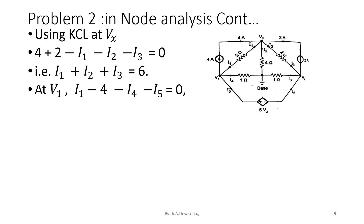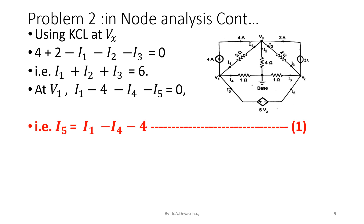At the node V suffix AX, the current I1 is entering and the current source 4 amps is leaving. Similarly, the current I4 is leaving and I5 is leaving. Therefore, at node V1, the equation is I1 minus 4 minus I4 minus I5 is equal to 0. That is, I5 is equal to I1 minus I4 minus 4. Consider this as equation 1.